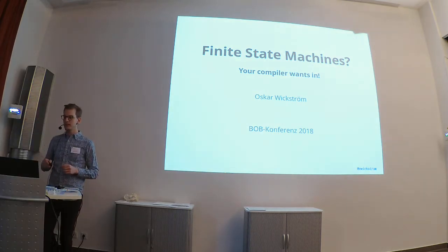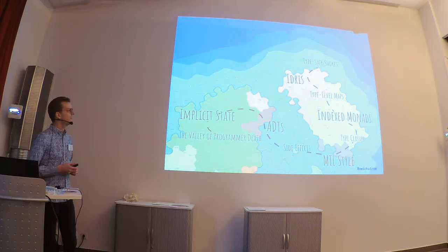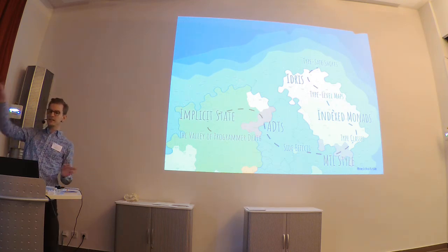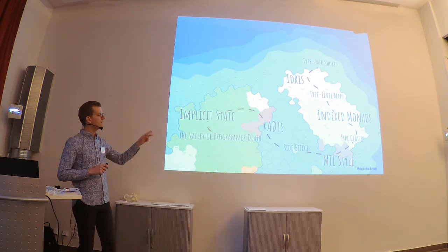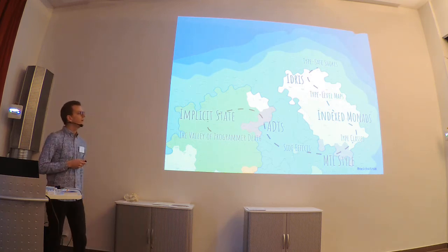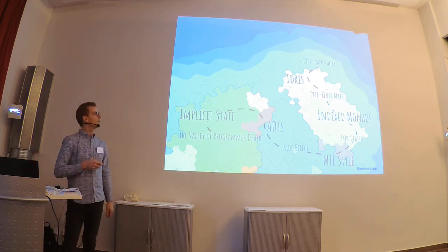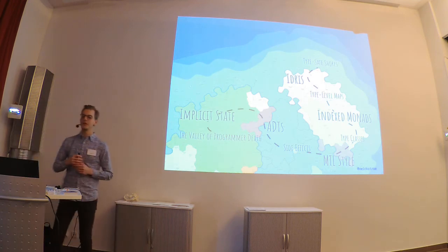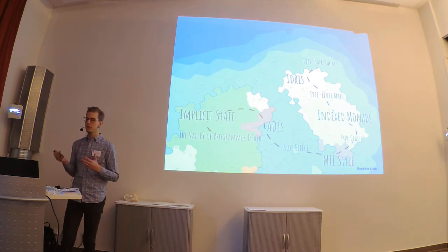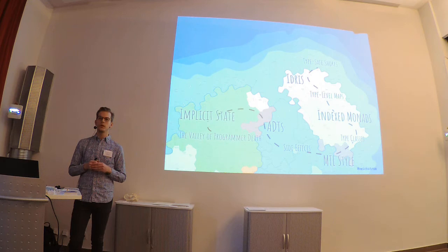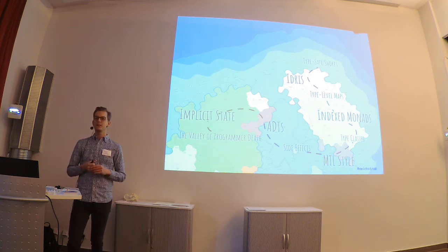Starting out with music, then making this little jump, and this is our journey for today. We will start in this valley of programmer death — this is where I started in PHP. Then we will walk through the vast lands of implicit states, take off from ADTs onto the nicer island, where we will pick up MTL style type classes, learn about indexed monads a bit. Then we will cross the value-type-level boundary into the land of Idris, where we will settle down on the typesafe shores. This will be a fast-paced tour of state machines and type systems, and I hope to show you examples of what your compiler can help you with when you do this kind of modeling, and hopefully inspire you to look at more stuff later.